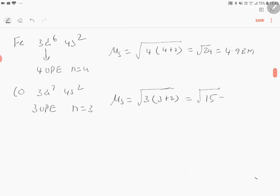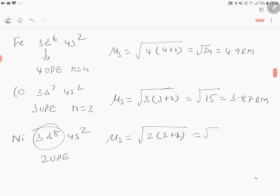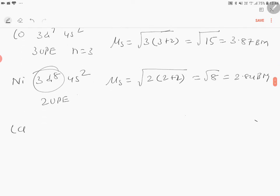Square root of 15, which is 3.87 Bohr magneton. Next, nickel 3d8 4s2. You will have two unpaired electrons. Spin-only magnetic moment equals square root of 2 into 2 plus 2. That's square root of 8, which is 2.84 Bohr magneton.